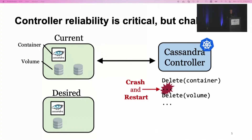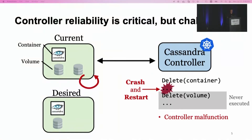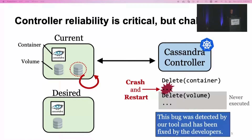Actually, there is a bug in this Cassandra controller. If the controller crashes after the first deletion, it will auto-restart. But after the restart, the controller starts to malfunction — it cannot do any useful reconciliation work and gets stuck in loops. The volume will never be deleted due to this bug, which causes a resource leak and security issue. This bug was detected by our tool and has been fixed by the developers. And note that this is really just a single bug example — there are many other controller bugs with different and even more complex triggers.